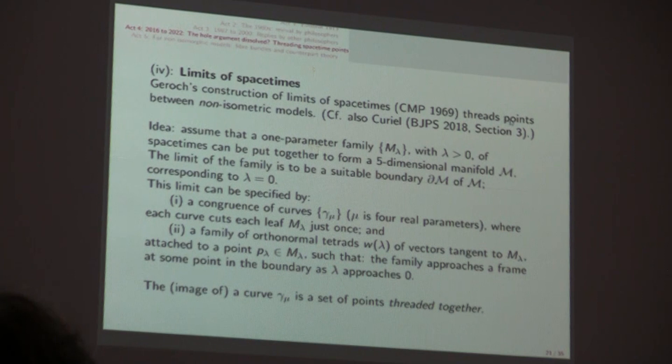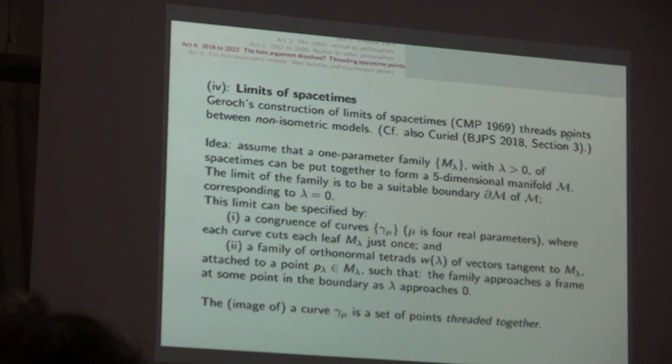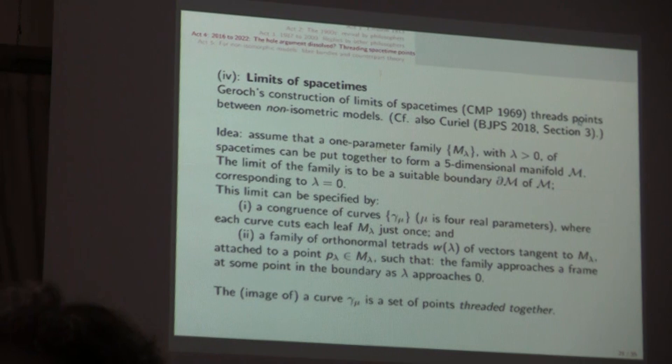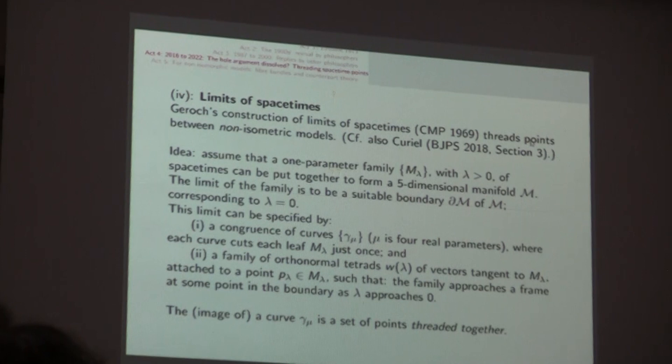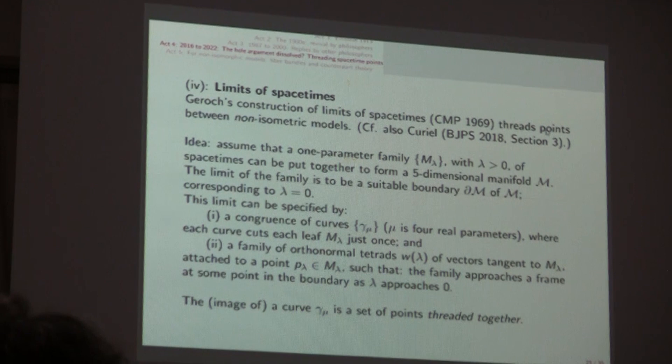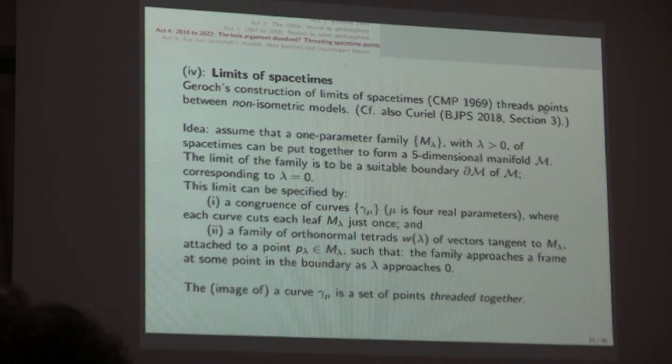We say that two points are threaded together, and we say a threading scheme to signal that there's no single canonical scheme, but you'll need non-zero Lie derivatives in order to talk about the motion of a non-rigid continuous body, for example, and in Noether's second theorem in general relativity. And you need threading also in this wonderful Geroch paper of 1969, where he constructs limits of spacetimes in communications in mathematical physics. He threads points between non-isometric spacetimes.